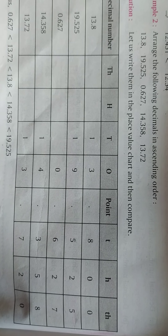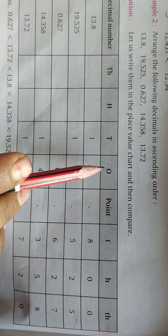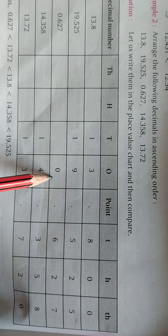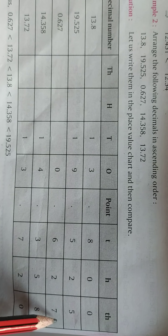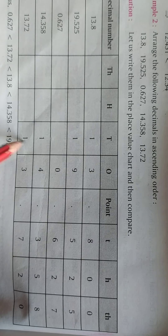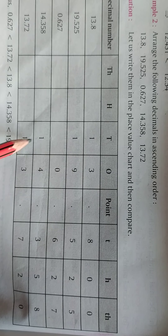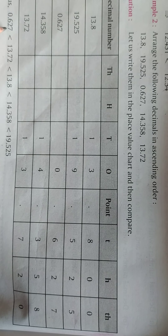We are arranging in ascending order, so we find the smallest number first. Comparing the first digit: the other numbers have whole parts 13, 19, 14, and 13, but 0.627 has whole part zero. So 0.627 is the smallest number.